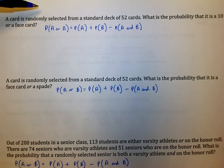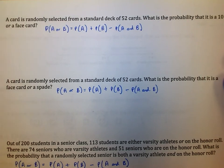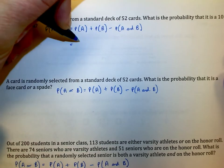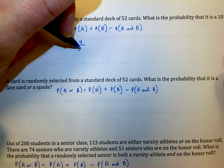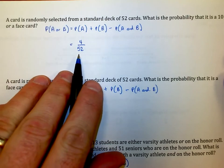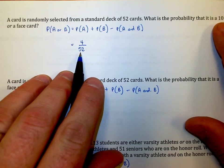A card is randomly selected from a standard deck of 52 cards. What is the probability that it is a 10 or a face card? The first thing that we want to do is find out what is the probability that I roll a 10. I know that four out of the 52 cards are 10s, or I could say one out of the 13 cards in every suit is a 10. I'll keep it at 4 over 52 for now, but you could easily make that 1 over 13.